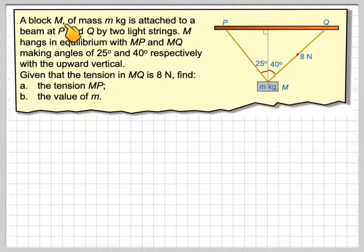A block M of mass m kilograms is attached to a beam at P and Q by two light strings. M hangs in equilibrium with MP and MQ making angles of 25 degrees and 40 degrees respectively to the upward vertical. Given that the tension in MQ is 8 newtons, find the tension in MP and find the value of the mass m.